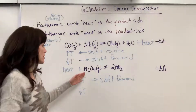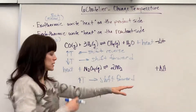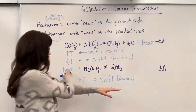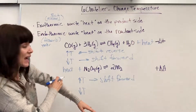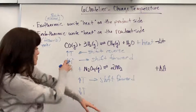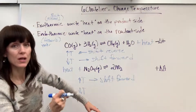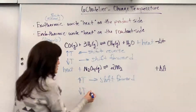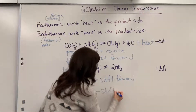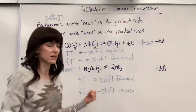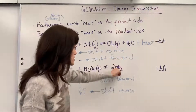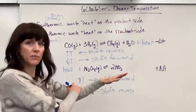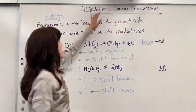Now let's say we decrease the temperature of this endothermic reaction — set it in an ice bath, pulling out some of that energy. We don't have as much heat; it gets light on the reactant side. Which way is it going to shift? It shifts in the reverse direction — back toward the reactants — pulling it back into equilibrium. There will be more collisions on the product side; it consumes products and makes more reactants. And that is Le Chatelier's principle.